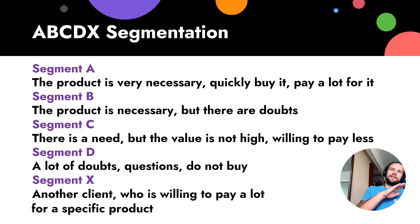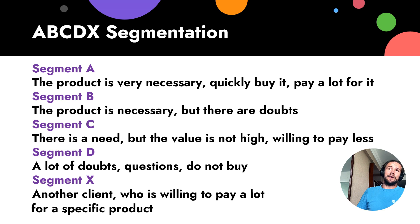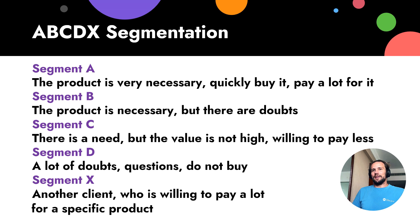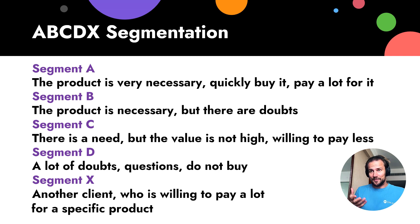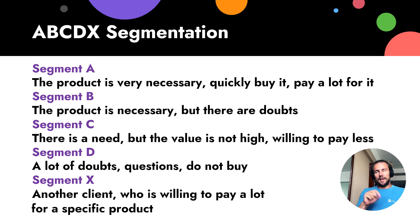Segment D — they never pay, but of course they require a lot. They keep your support busy, they write lots of tickets, they require a lot. And even if you satisfy them, they still will not use you — or they will use you for a shorter period and switch to a competitor as fast as possible.